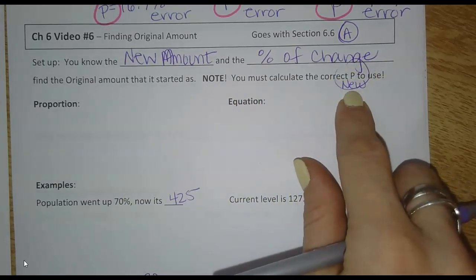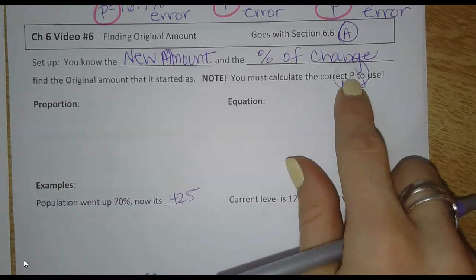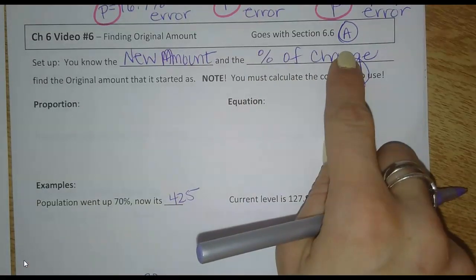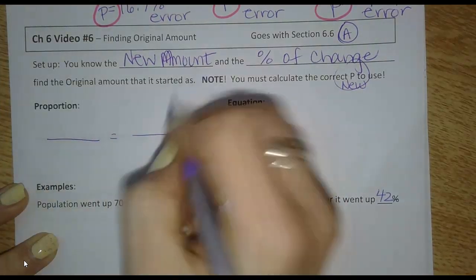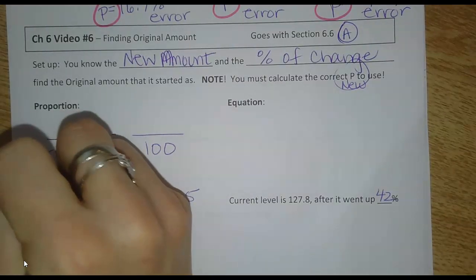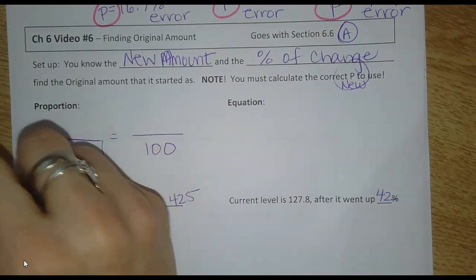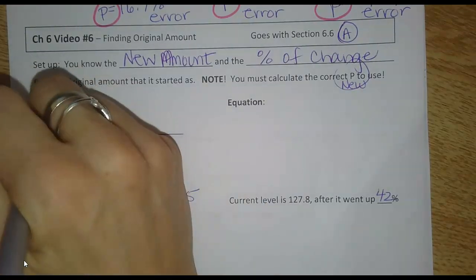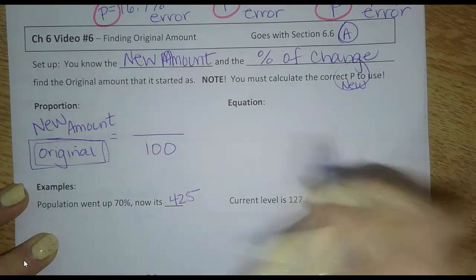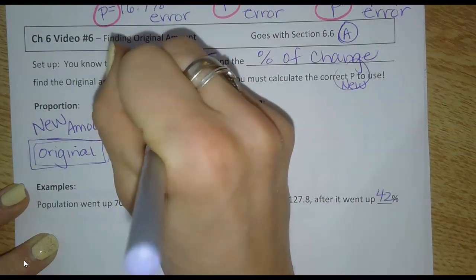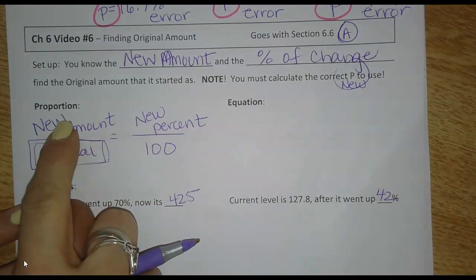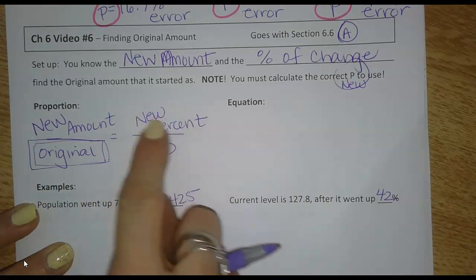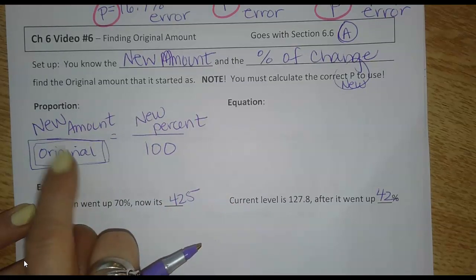So I'm going to call that the new percent that I'm going to be actually using in my work. They're going to give me a percent in the problem, this percent of the change, but that's not what I'm actually plugging in as I do the work. In the proportion, we know this is always 100. This is the original amount that we're trying to find. So this is what we're looking for. We're going to know the new amount, which goes up here in the A or the part, and we're going to have to plug in the new percent. This will be given in the problem. They're going to tell me a percent that I'm going to use to find this, and then I'm going to cross multiply it to figure out the original.